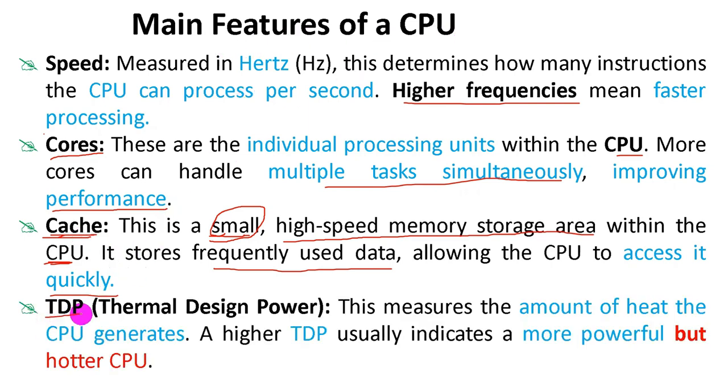TDP or thermal design power. This means the amount of heat the CPU generates. A higher thermal design power or TDP usually indicates a more powerful computer or CPU, but a hotter CPU, which means the heat of the CPU is increased.